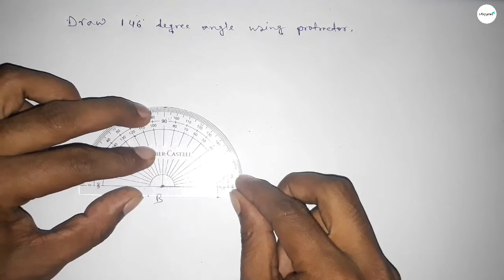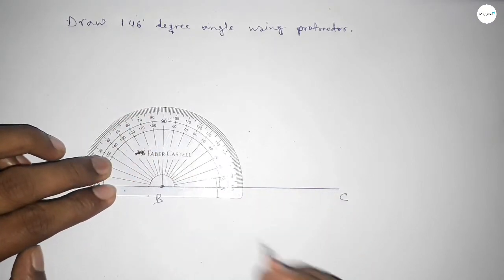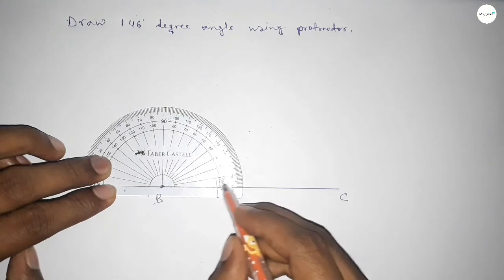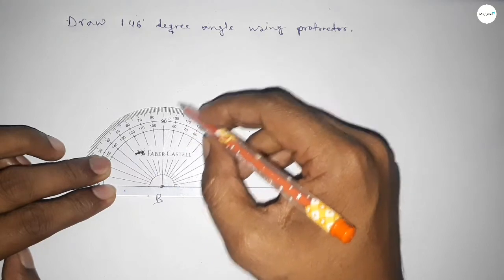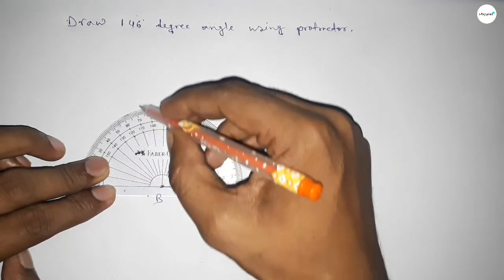Then counting the angles. So this is starting angle 0, 10, 20, 30, 40, 50, 60, 70, 80, 90, 100, 110.